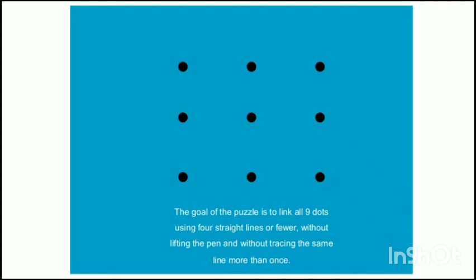Hi students, I hope you are doing well. Today we are going to talk about something very interesting — another topic of the fourth chapter, that is cognitive process. Before going ahead, I want you all to solve this puzzle. The goal is to link all nine dots using four straight lines or fewer, without lifting the pen and without tracing the same line more than once.